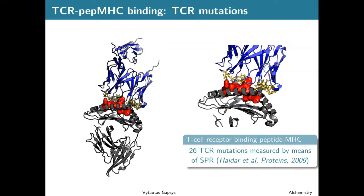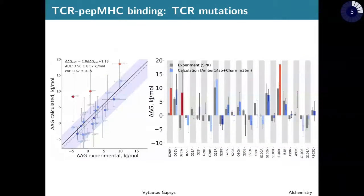It would be very interesting to understand if our calculations could identify residue mutations on the T cell receptor responsible for identification of these potentially dangerous peptides. I have colored some important residues that have been previously tested in an experimental SPR experiment, published previously. This presents a good test case, and when we run our alchemical free energy calculations we see very good agreement between calculation and experiment.